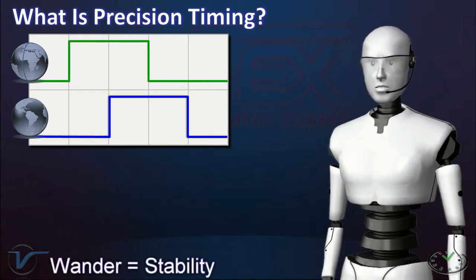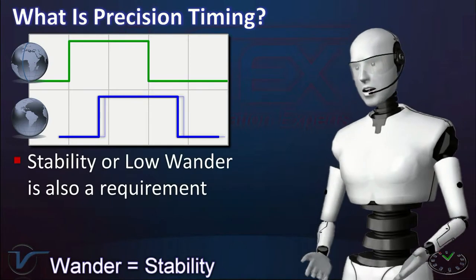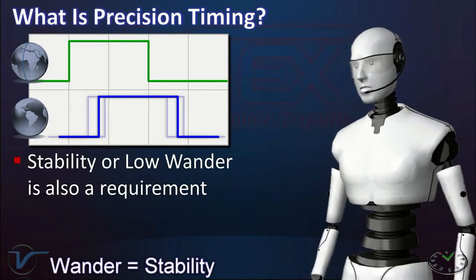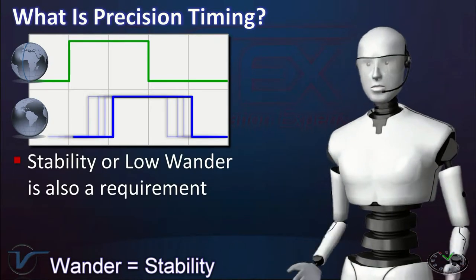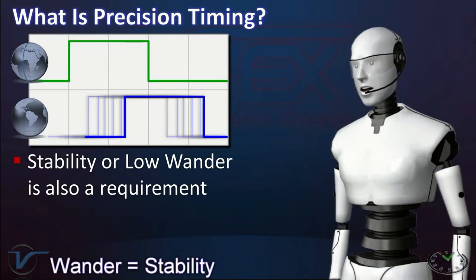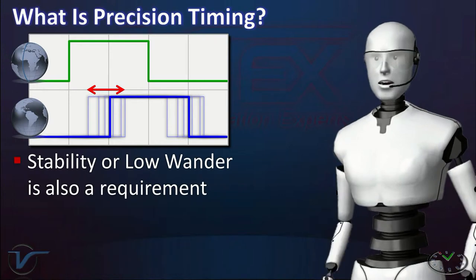The pulse's position should not change much, or wander around over time. How much and how fast it changes defines the stability of the timing signal. The smaller the wander, the more stable the timing is.